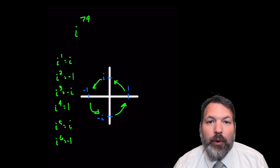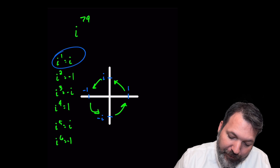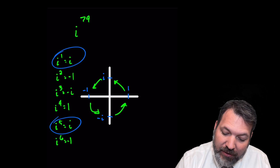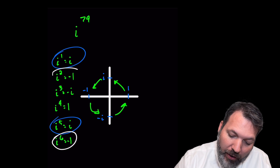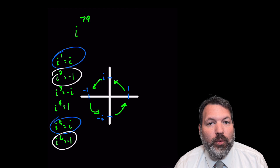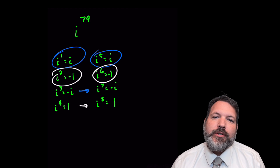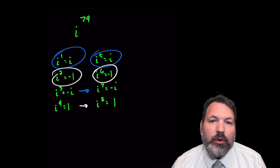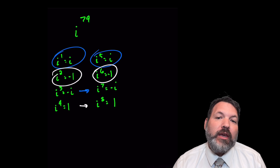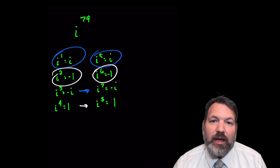i to the fifth is going to be i, in the same way that i to the first was equal to i. i to the sixth is going to be negative 1, in the same way that i squared was equal to negative 1. This is why your teacher talks about powers of i coming in some sort of cycle of fours, or thinking of them in terms of mod 4 of the power itself.